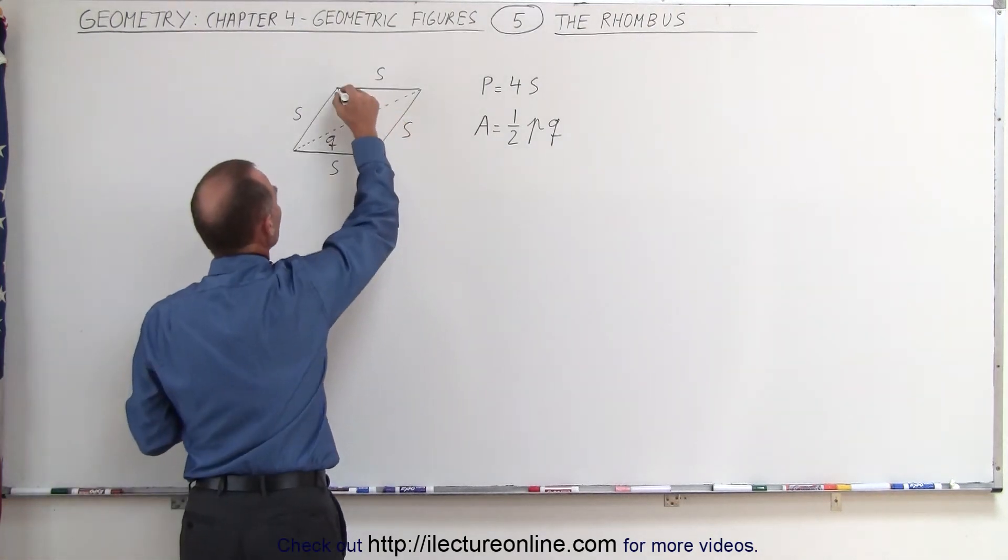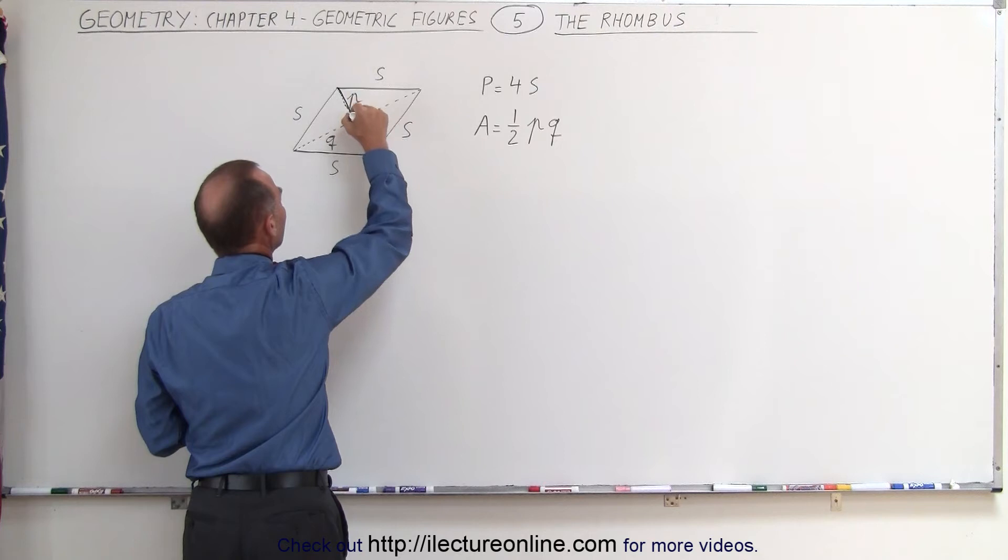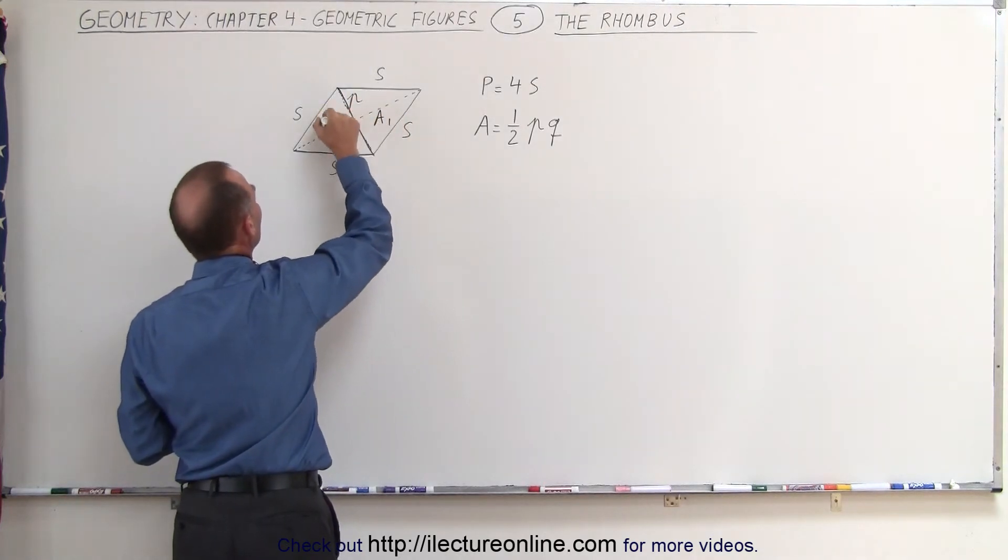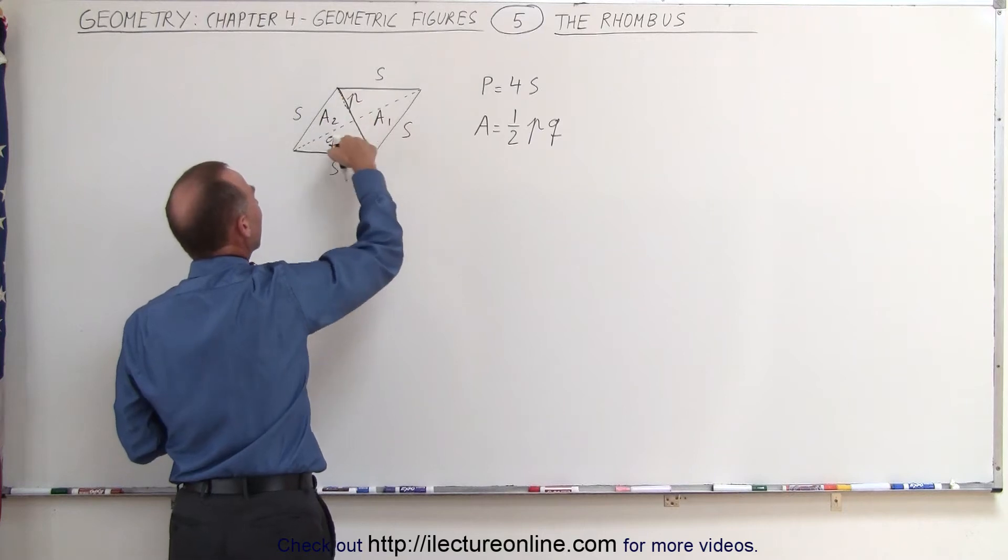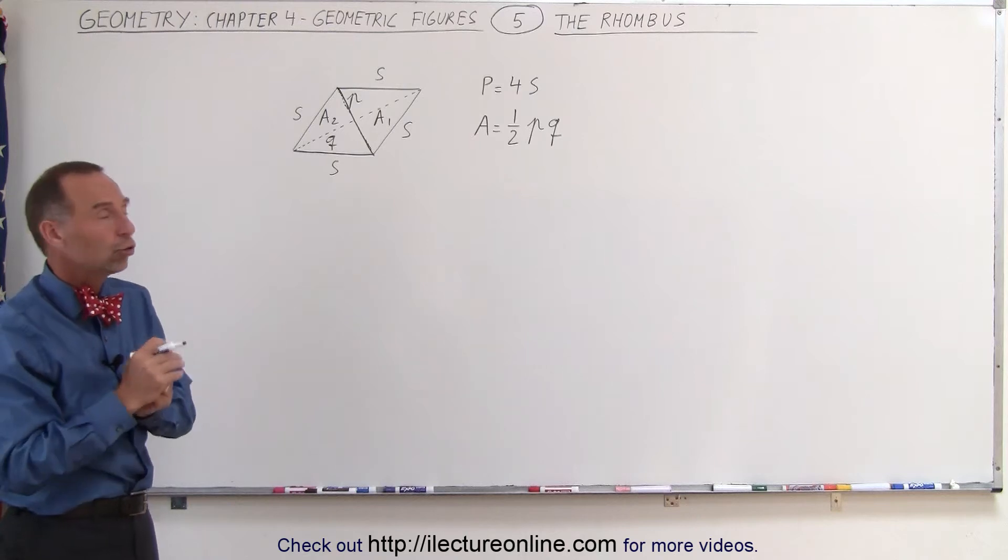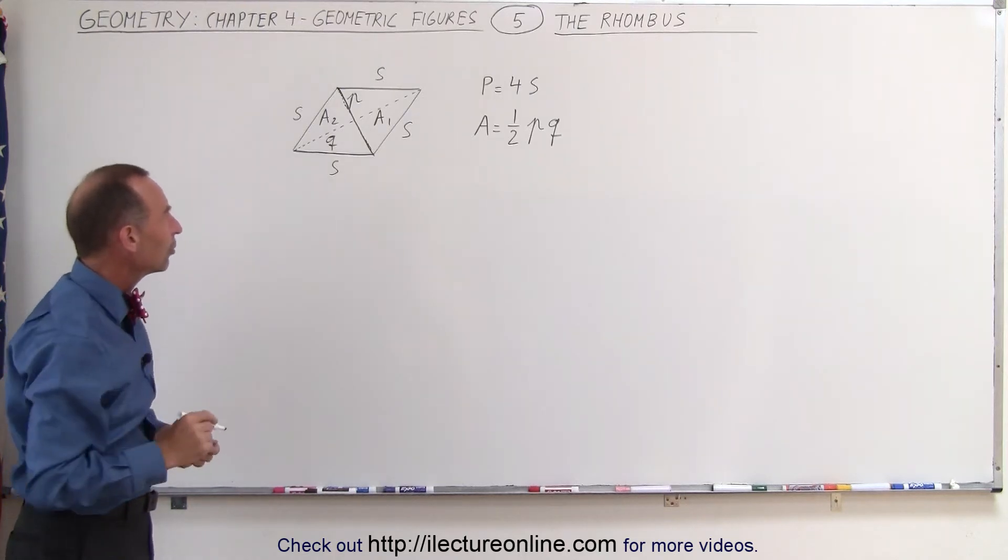So I'm going to label this triangle, I'm going to make this into a solid line so you can see this. So let's call this area A1 and let's call this area A2 for the area of the two triangles, realizing that the sum of those two areas should equal the area of the rhombus.